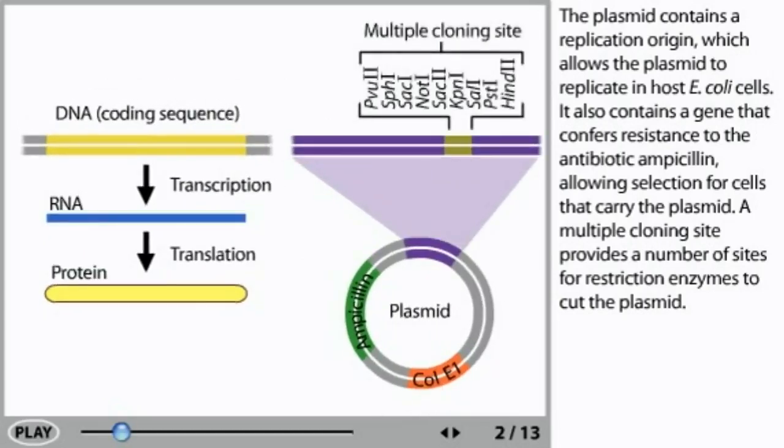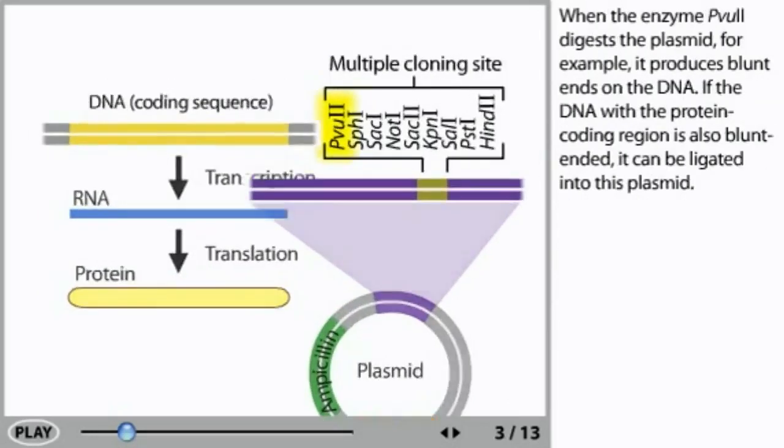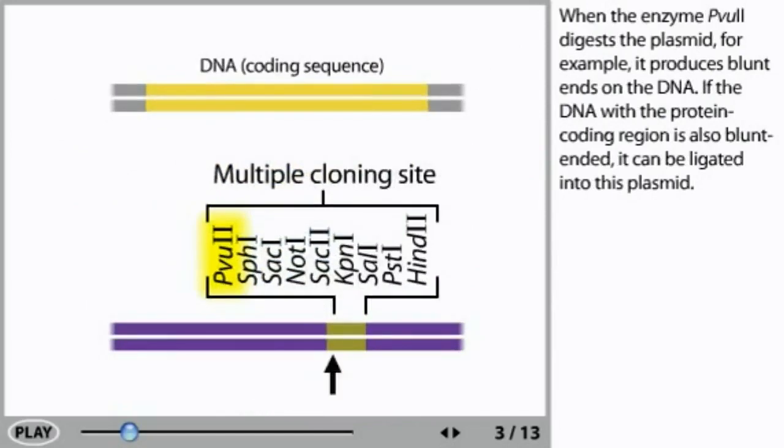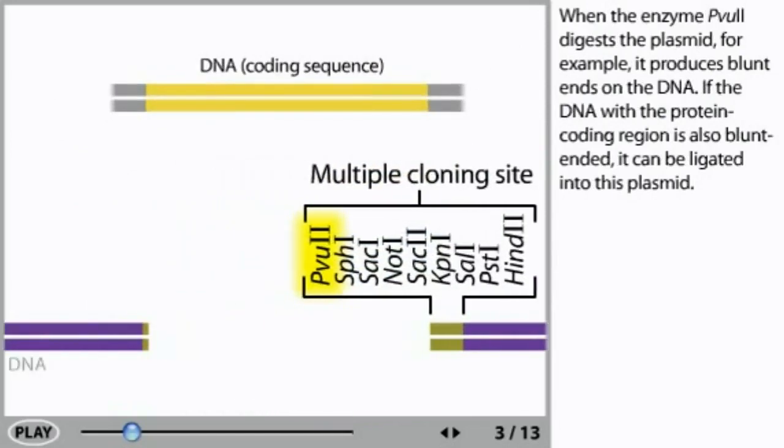A multiple cloning site provides a number of sites for restriction enzymes to cut the plasmid. When the enzyme PvuII digests the plasmid for example, it produces blunt ends on the DNA. If the DNA with the protein coding region is also blunt ended, it can be ligated into this plasmid.